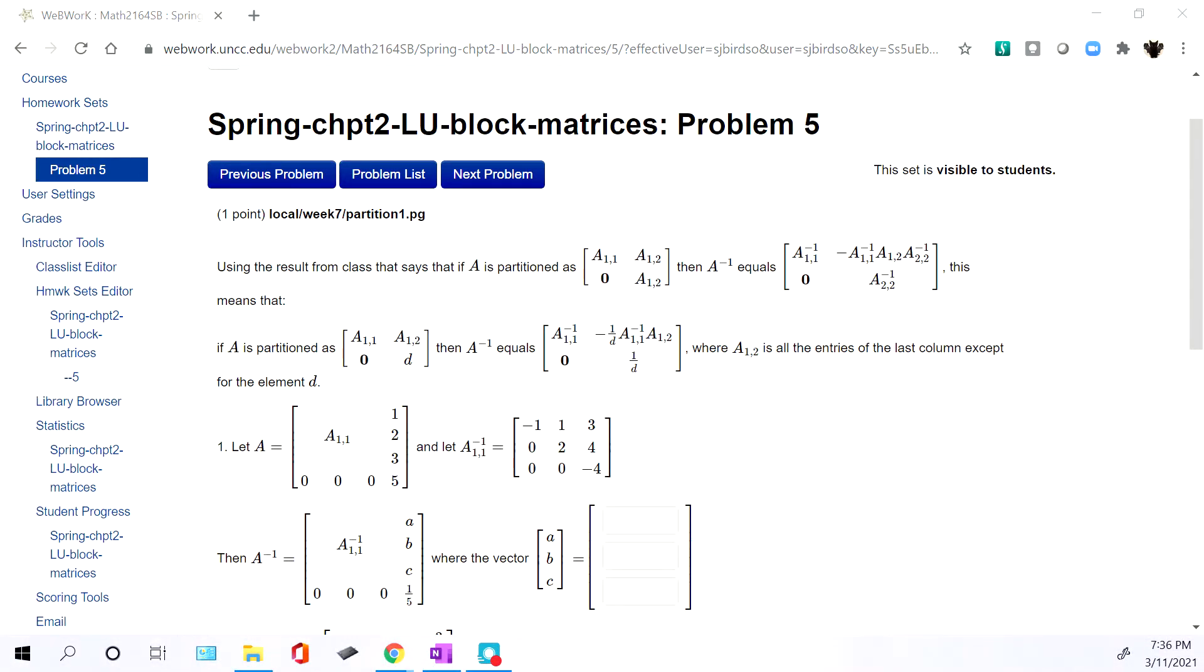So first thing is I'm actually over in WebWork in question number five. You probably have different numbers, but this is the one that got randomly generated for me. This is the same exact formula that we had in class. We have an upper triangular block matrix right here, so each of those components are blocks.